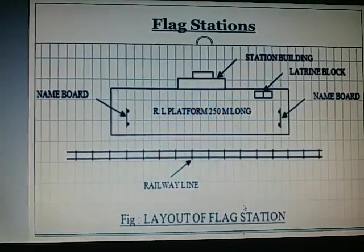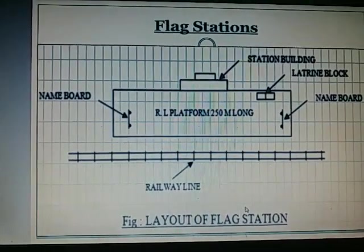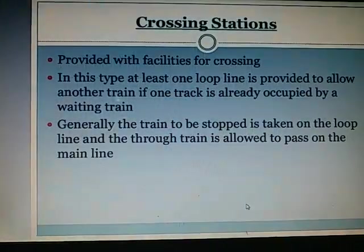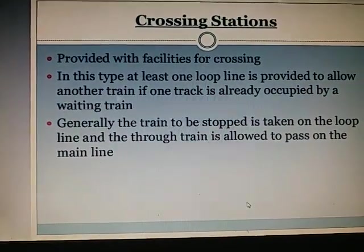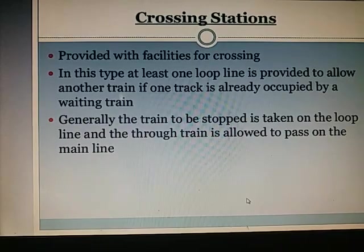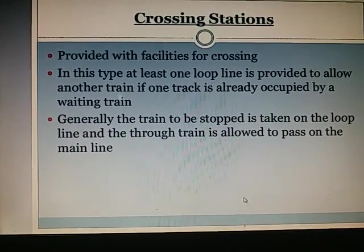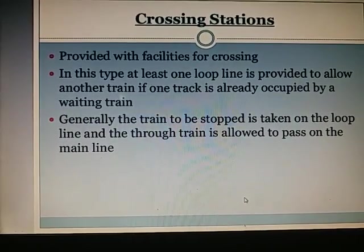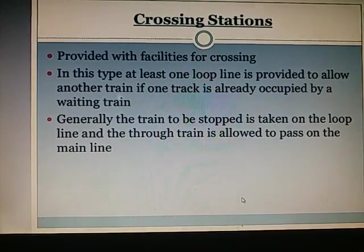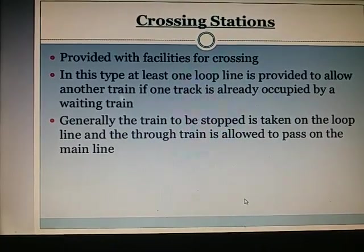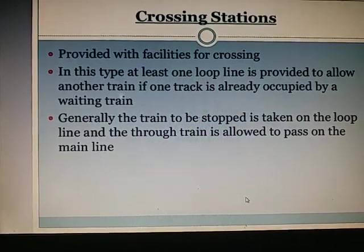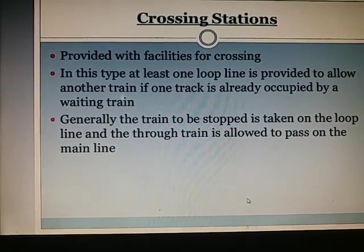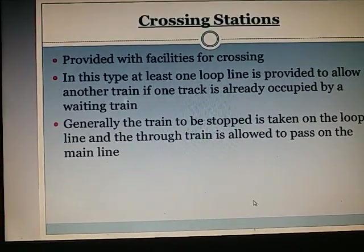Some flag stations have sidings also in the form of a loop. Crossing stations are provided with the facility of crossing. In this type, at least one loop line is provided to allow another train if one track is already occupied by a waiting train.